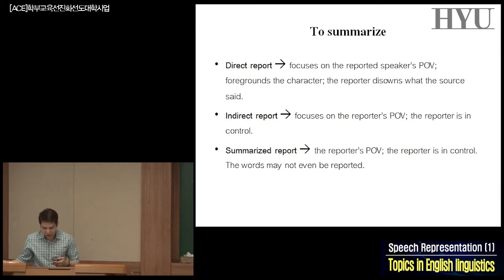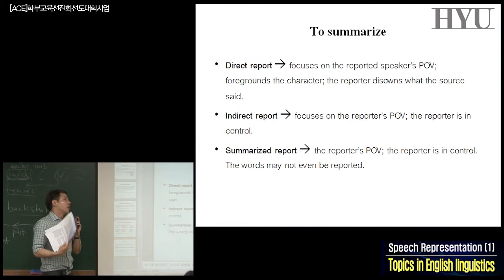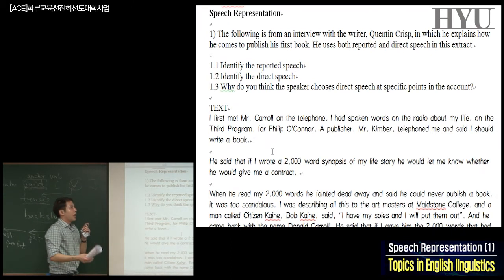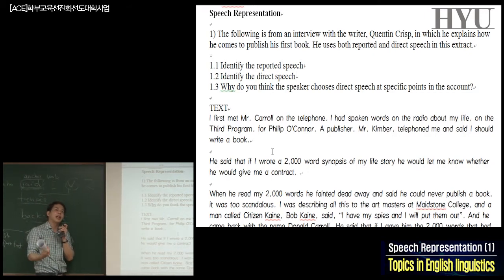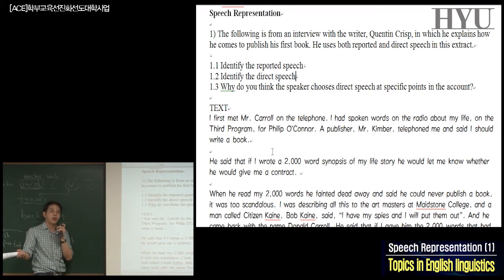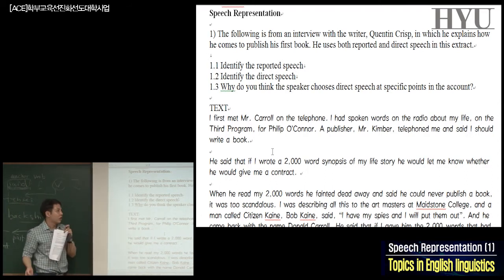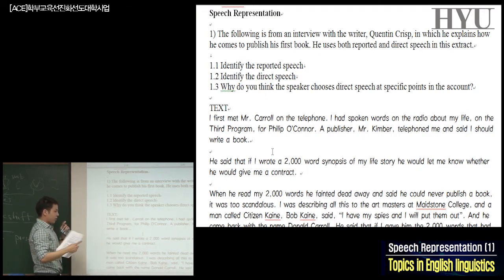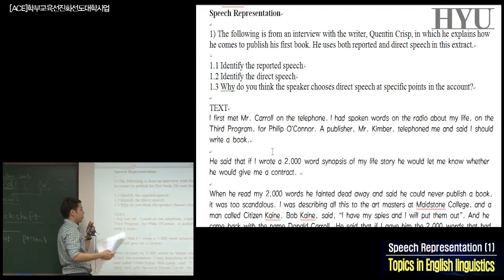For the rest of today, I have some examples to show you, and we'll focus on the details of each type. The example is a conversation between an interviewer and a writer named Quentin Cripps, who explains how he came to publish his first book. I'll have you identify the reporter's speech and the direct speech. Let's look at the first two paragraphs.